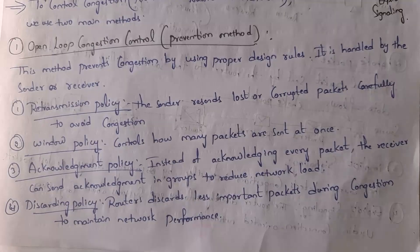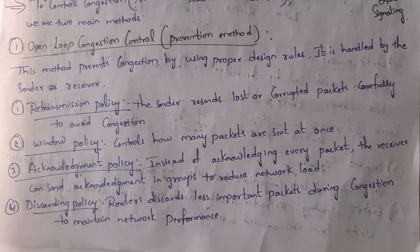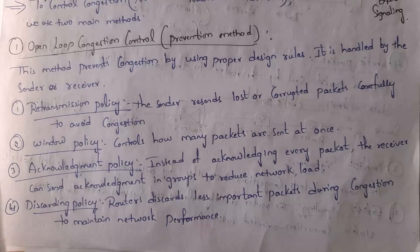Window policy means we need to set a window size. For example, if I set window size as three, then only three packets can be sent at a time. If I give window size as five, we can send only five packets at a time. So this will help avoid congestion.